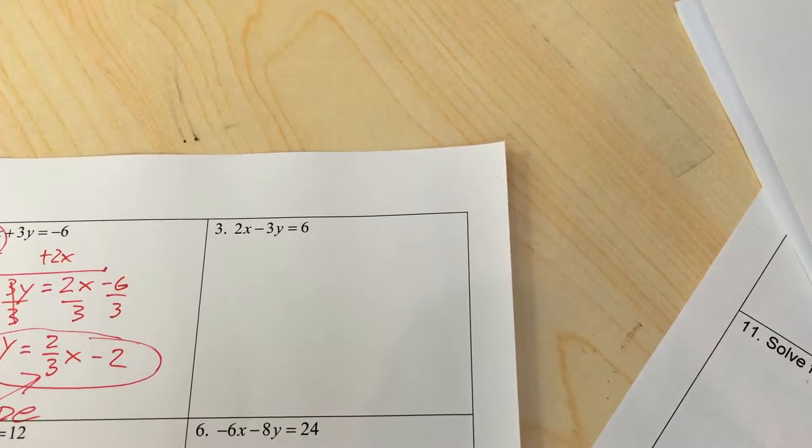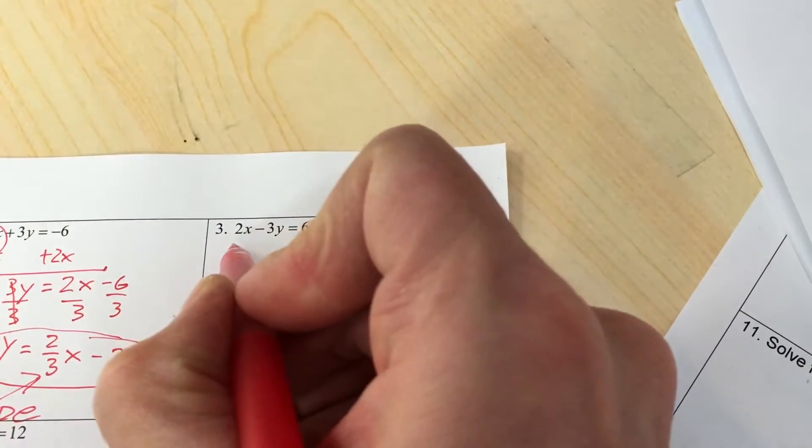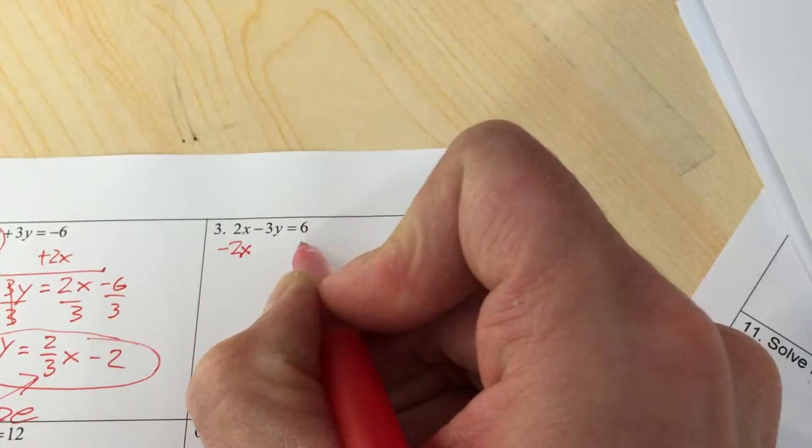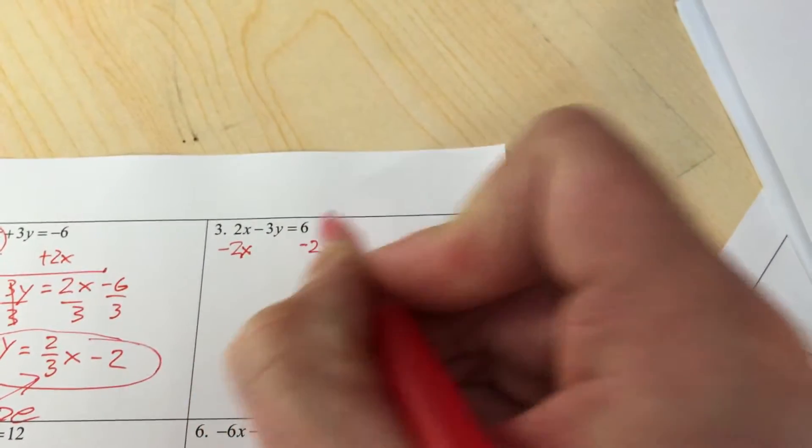Our last one that I'm going to do in our example - actually second to last - I'm going to try to get another one in before people start banging down the door. Subtract 2x from both sides. You're always going to be subtracting x.